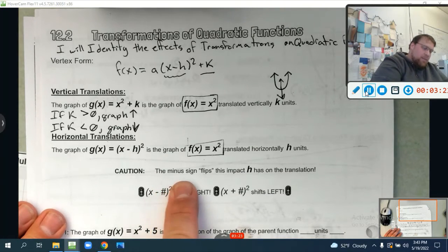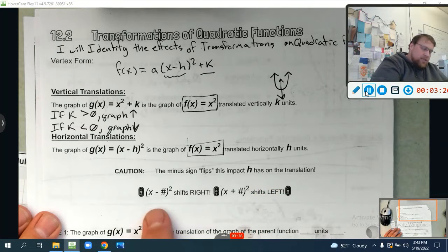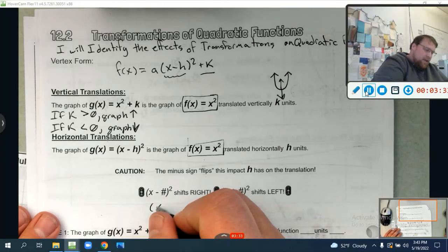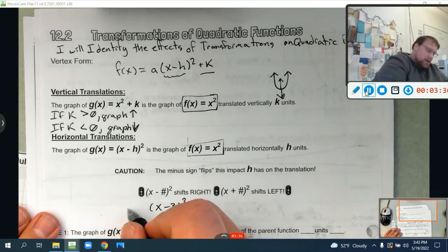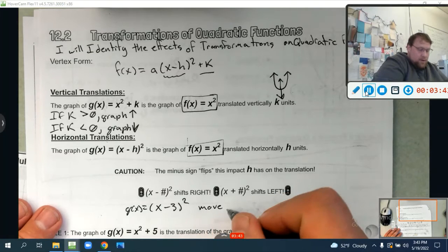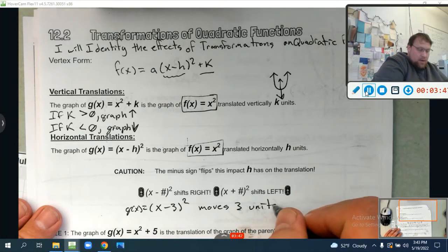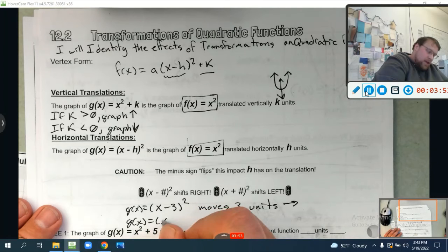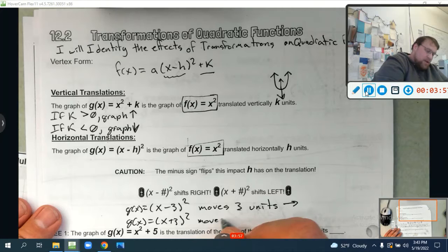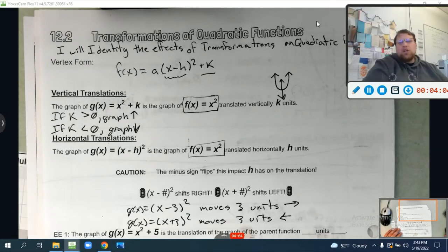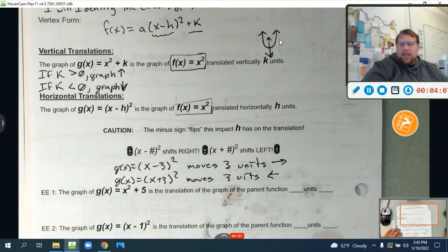And we have that written right here. The minus sign flips this impact h has on the translation. So (x minus any number) squared shifts right, and (x plus any number) squared shifts left. So in other words, if I have (x minus 3) squared, that moves three units right. Whereas if I had g(x) equals (x plus 3) squared, that moves three units left. It's the hardest part of this whole thing. You got to wrap your head around k is telling you exactly what to do, and h is really telling you the opposite thing to do.